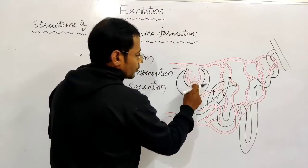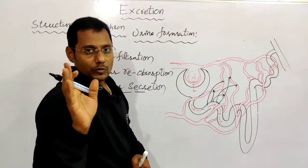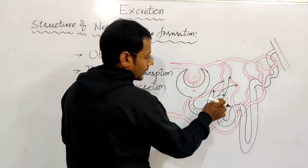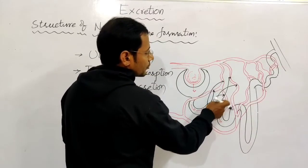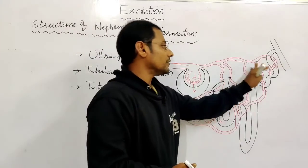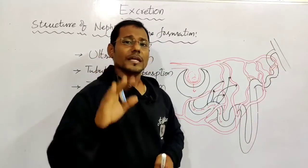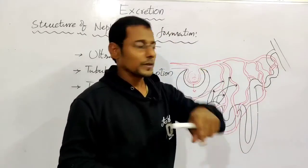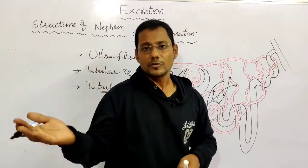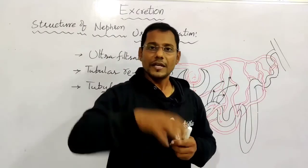Blood is filtered in the Bowman's capsule to form primary urine. Important materials in the primary urine - like glucose - are reabsorbed into the blood in the second step, tubular reabsorption. Then in tubular secretion, excess waste material is secreted into the tubule. The urine then reaches the collecting duct, then the pelvis, then the ureter, and finally the bladder.